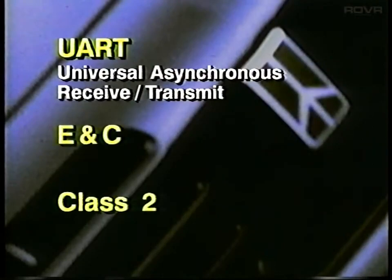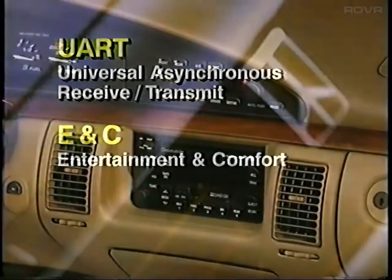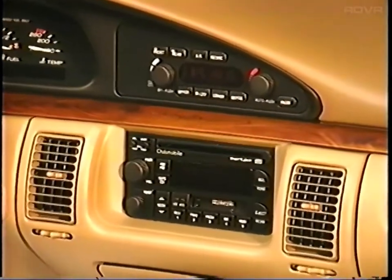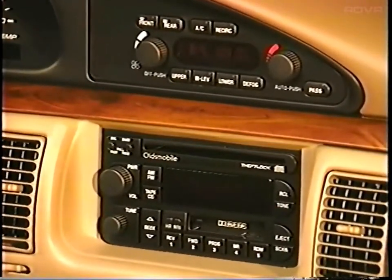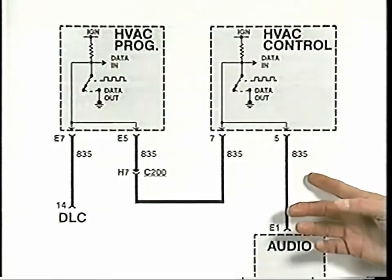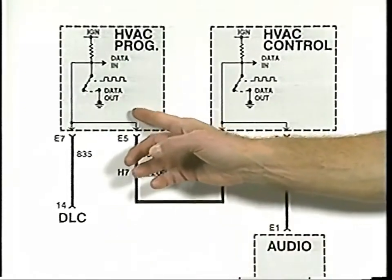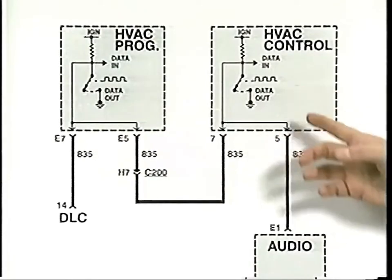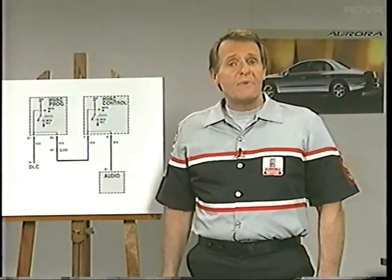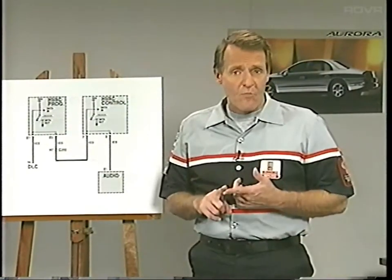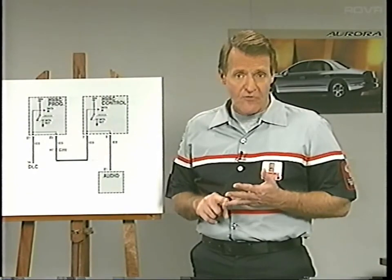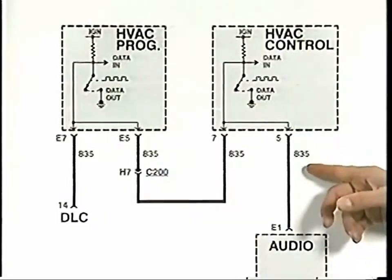Now, much more briefly, the other two types of serial data lines. Some Oldsmobiles also have the second type of bus: an Entertainment and Comfort bus. The E&C bus allows driver control and technician testing of the heating, air conditioning, and audio systems. In service manuals, E&C schematics follow the EWERT ones in the 8A-50s. This E&C is for an 88 and 98, and it includes the HVAC programmer, the HVAC control head, and the audio system. Other modules that might be included are steering wheel components, the CD changer, and a cellular phone. The circuit number for the E&C bus is 835.